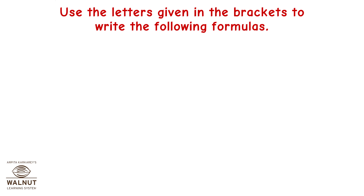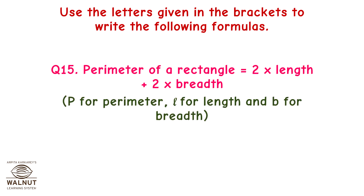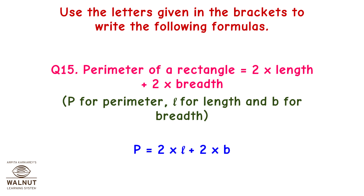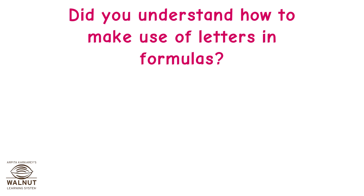Use the letters given in the brackets to write the following formulas. Question 15: Perimeter of a rectangle is equal to 2 into length plus 2 into breadth. P for perimeter, L for length, and B for breadth. Therefore, P is equal to 2 into L plus 2 into B. Did you understand how to make use of letters in formulas?